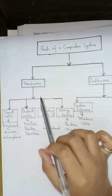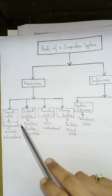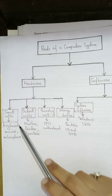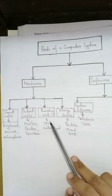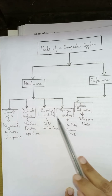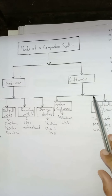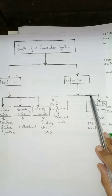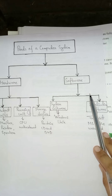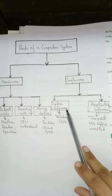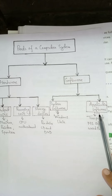Hardware is divided into four groups: input units, output units, processing units, and storage devices. Software is divided into two groups: one is system software and the second is application software.